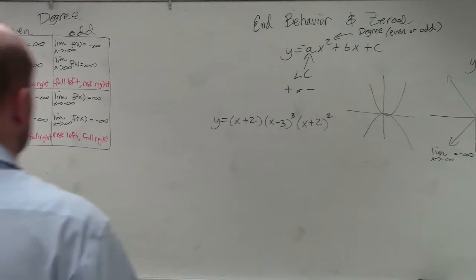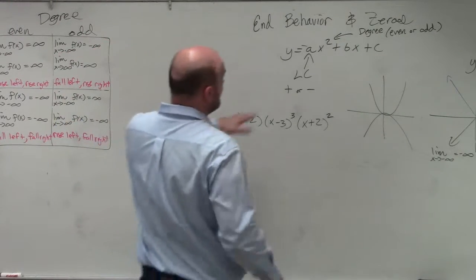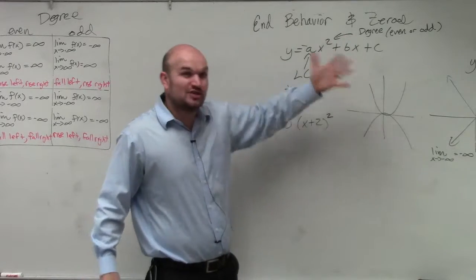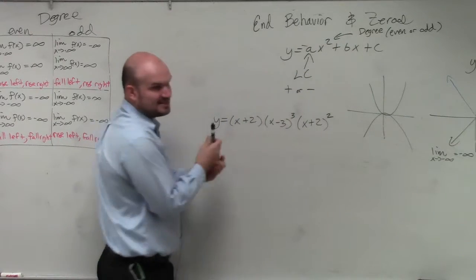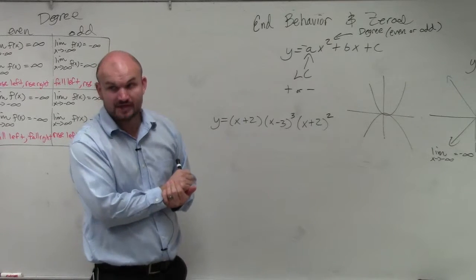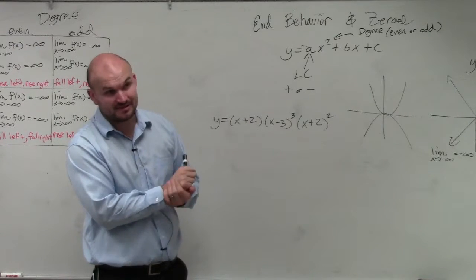So what I want you guys to understand here is, when we're finding the end behavior, we have to find the degree, which is the largest power. We can't find the largest power unless this is expanded. Do you guys agree? We have to expand this.